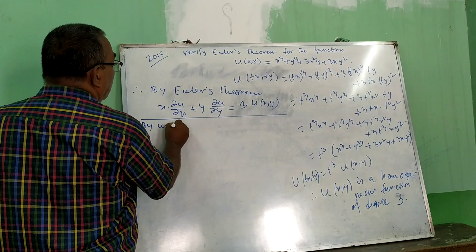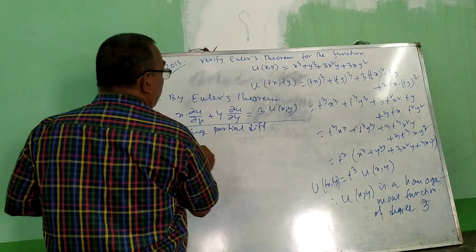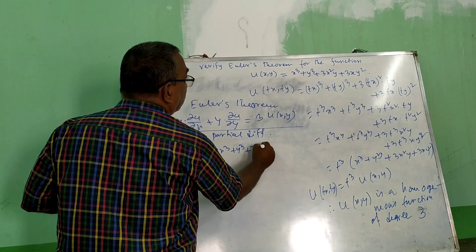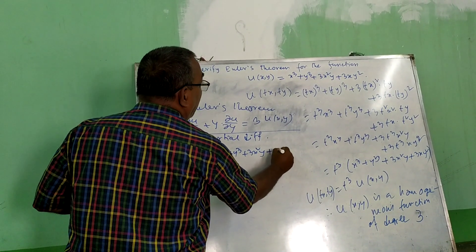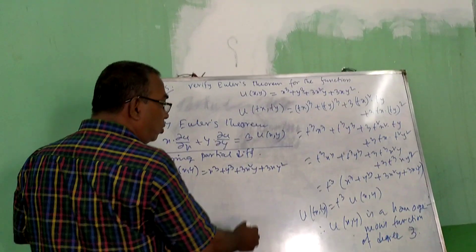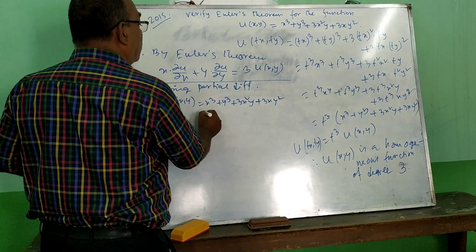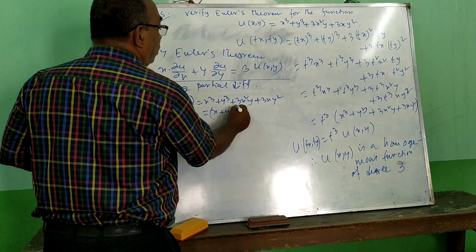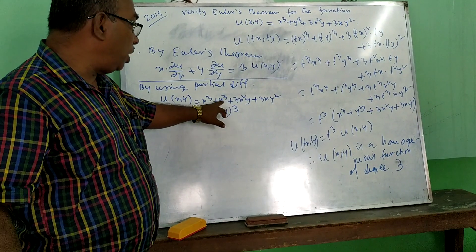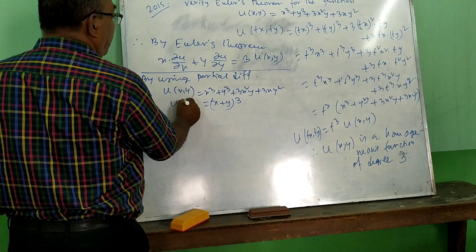By using partial differentiation, U(x,y) = x³ + y³ + 3x²y + 3xy². This can be written as (x+y)³ — since a³ + b³ + 3a²b + 3ab² = (a+b)³ — so U(x,y) = (x+y)³.